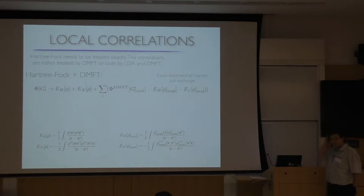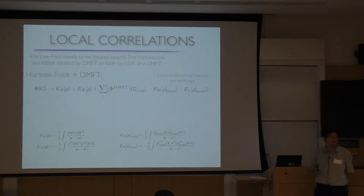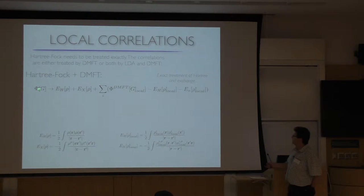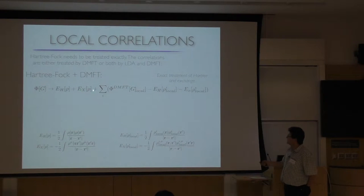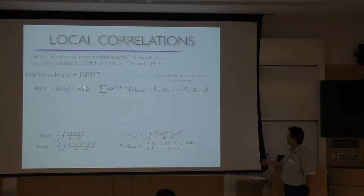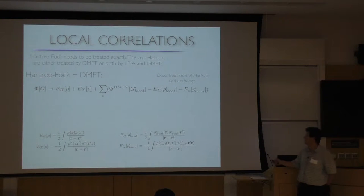One way is to do Hartree-Fock plus DMFT. We treat the Hartree term exactly because it is very large — you never want to approximate that, not even in DFT. For molecules, it turns out the exchange is also very large, so it's a good idea to treat it exactly, which is cheap. The rest is approximated with DMFT, adding all local graphs — local to the left atom, local to the right atom.